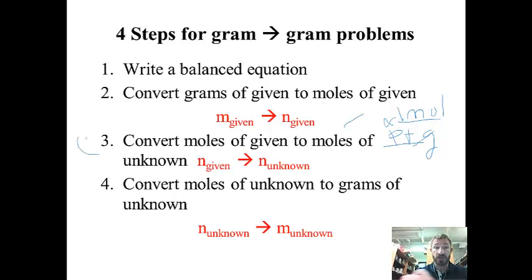Now the next step, number three, is what's new: convert the moles of given to moles of unknown. So you're going to go moles of given to moles of unknown, and to do this we're going to use a mole ratio. In order to do this mole ratio, you have to have a balanced equation. So you'll have to use a balanced equation for that part.